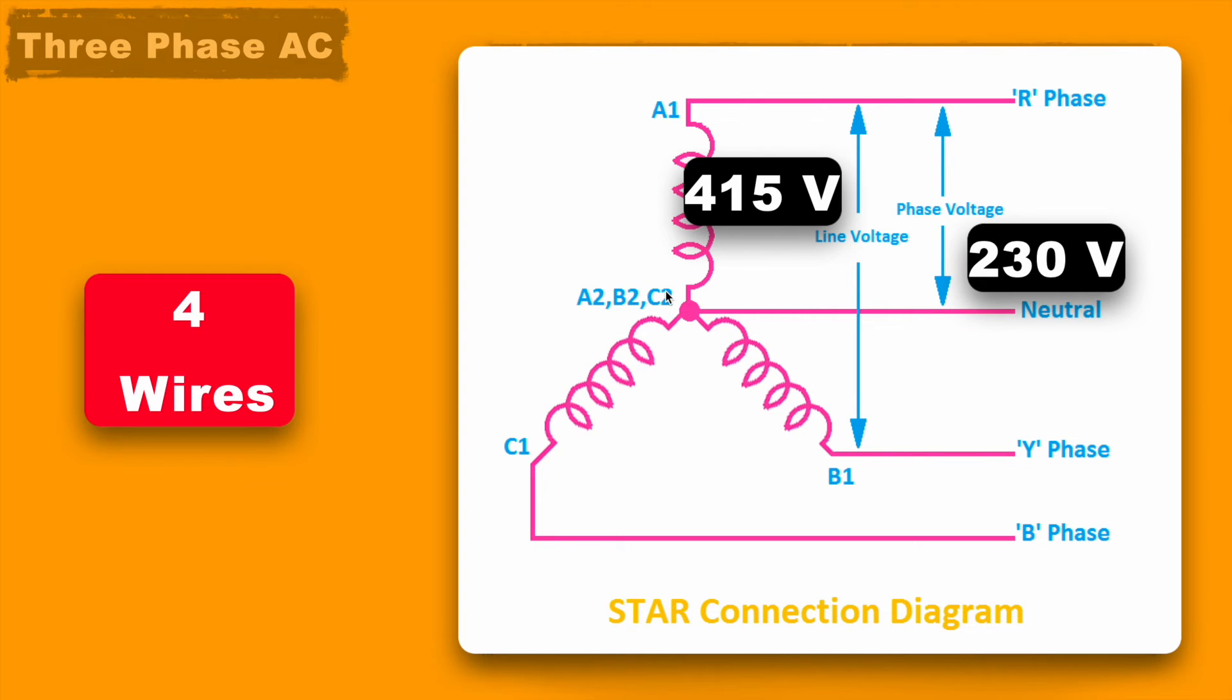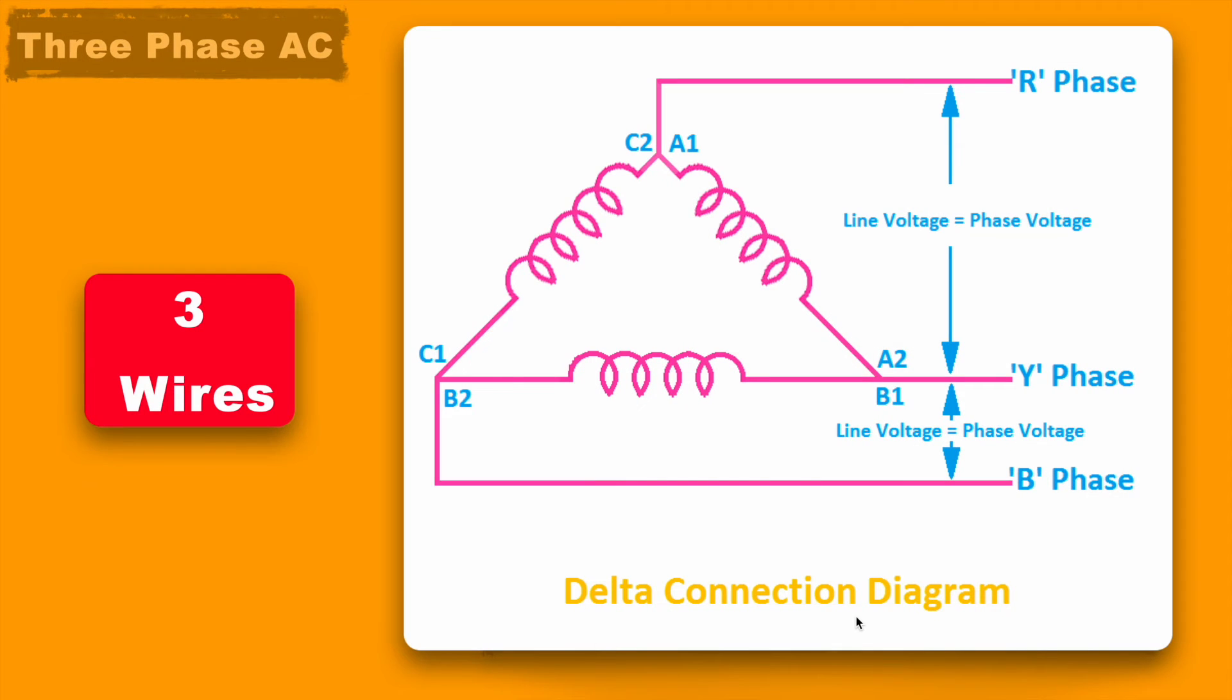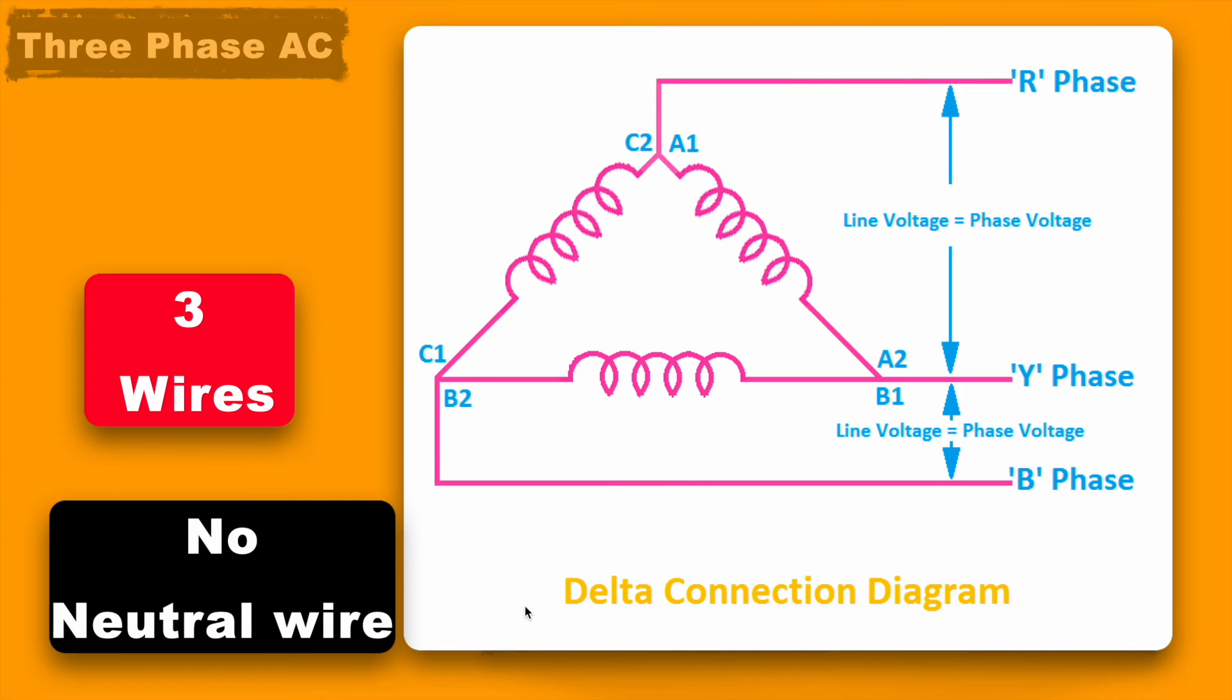In this configuration it uses 4 wires, 3 phases and one neutral. And another configuration is delta connection. So in this connection it is connected like a delta. It uses only 3 phases and doesn't use neutral wire.